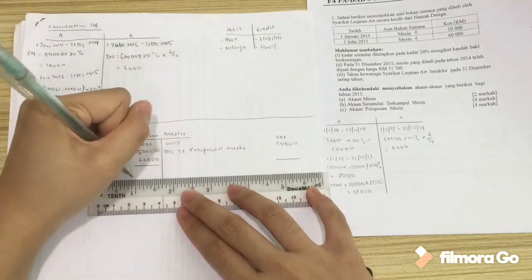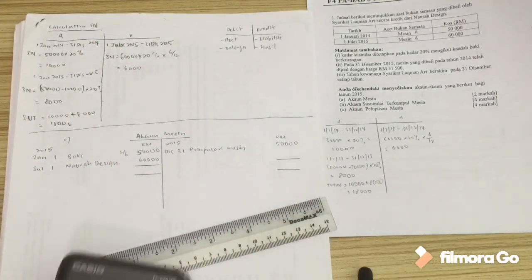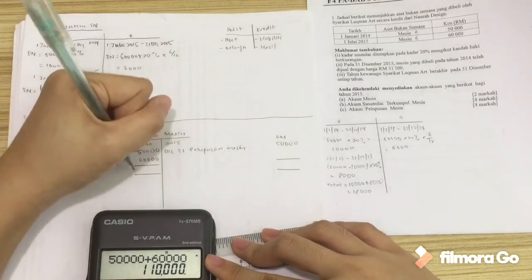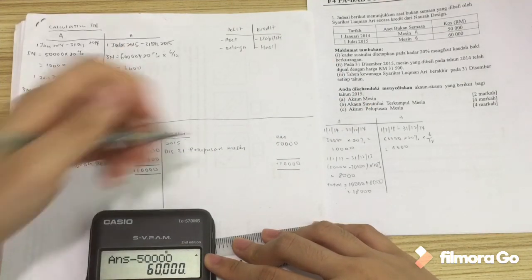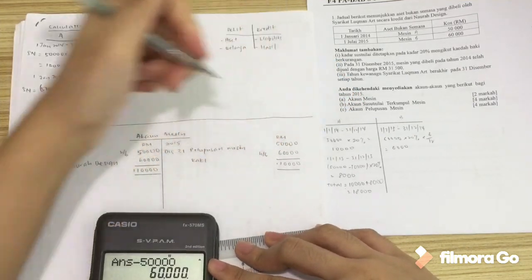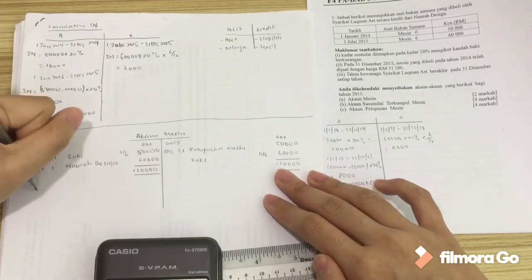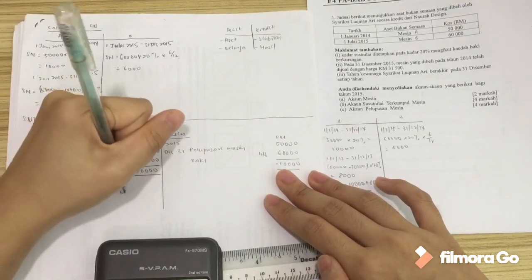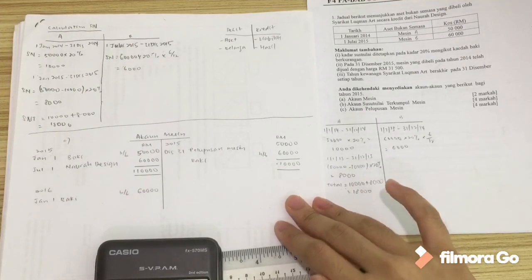That's it. If we don't have anything more to add, then we draw the garisan jumlah. Always take the larger side, add it up, then minus the other side. This is HB. We have HB, we must have BB. So just write it at the opposite side: 60,000 Baki BB, 2016 1st of January. That's it for our account machine.